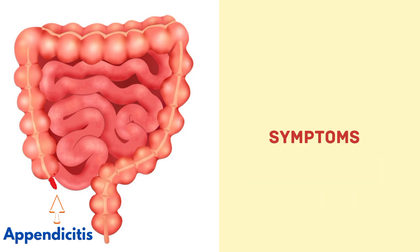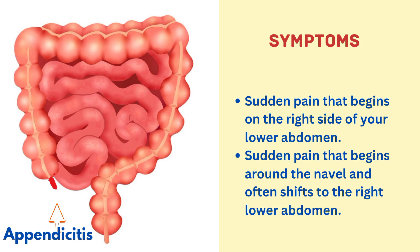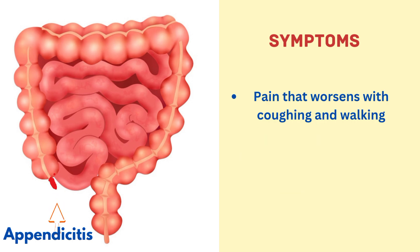Symptoms of appendicitis include: sudden pain that begins on the right side of your lower abdomen, or sudden pain that begins around the navel and often shifts to the right lower abdomen, pain that worsens with coughing and walking, nausea and vomiting.